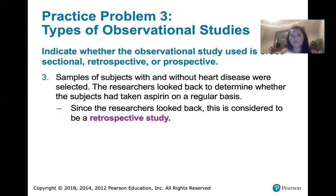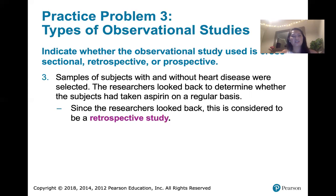Those are our three types of observational studies. Cross-sectional: data are collected at one moment in time. Retrospective: data collected from the past, usually from records. And prospective or longitudinal: we have cohorts and look at how those cohorts change and evolve over time — collecting data now, and then also collecting data as we go into the future.